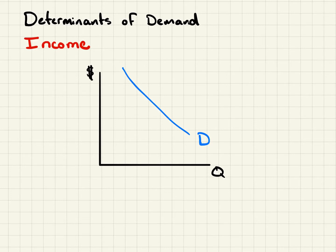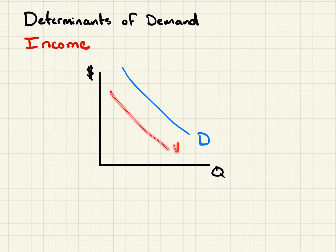Regarding income, income is the next big determinant of demand. Income is the next thing that will actually shift the entire curve out, which is an increase, or in, which is a decrease in demand. So income works this way.